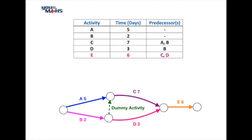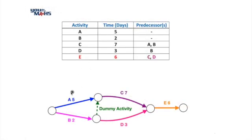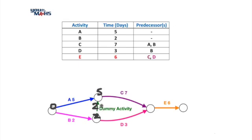Now let's look at how we find the critical path using the dummy activity. To determine the critical path we start on the left-hand side node at zero days, placing that number at the top of our circle. Moving left to right, we have one arrow coming into the bottom node and two arrows coming into the top node. The bottom node has only activity B coming in, which takes two days. Coming through the dummy activity there's no extra time, so it's still two days. Activity A takes five days and because that's the longest time, five days is the earliest we can start activity C.